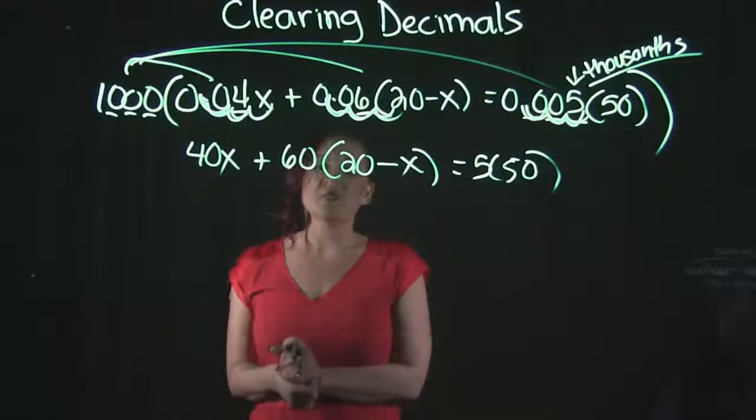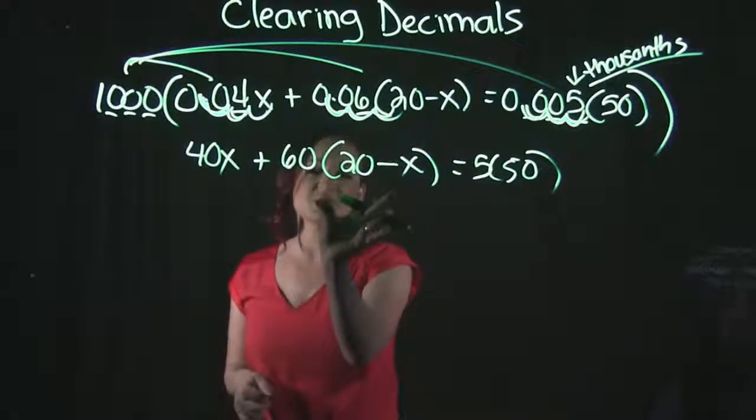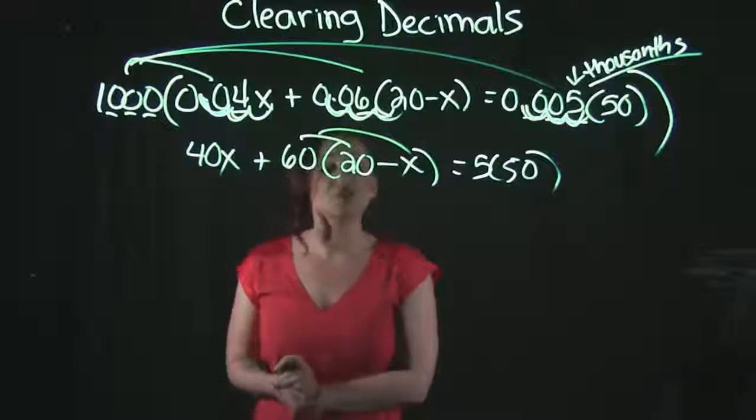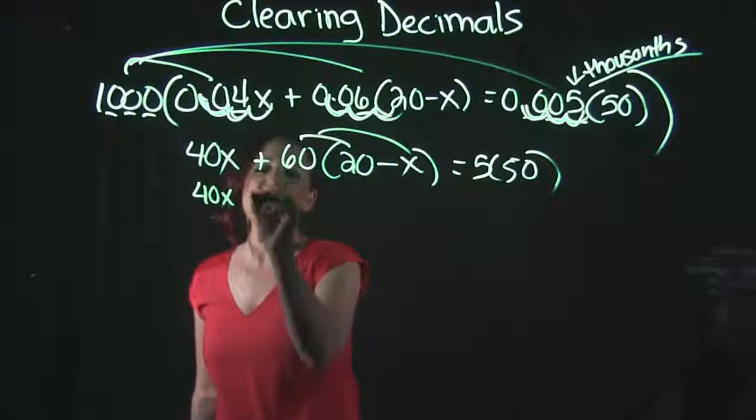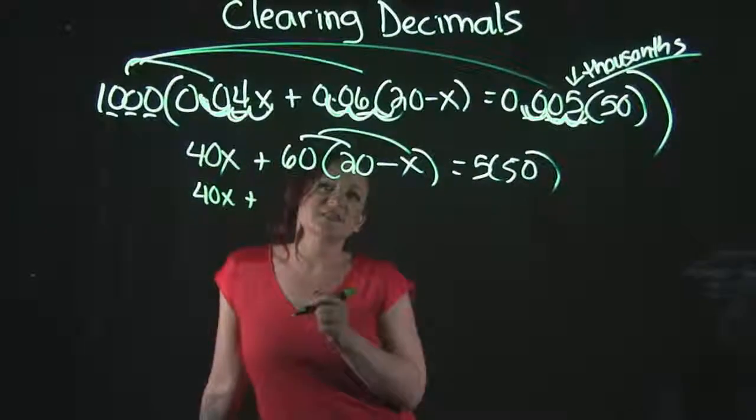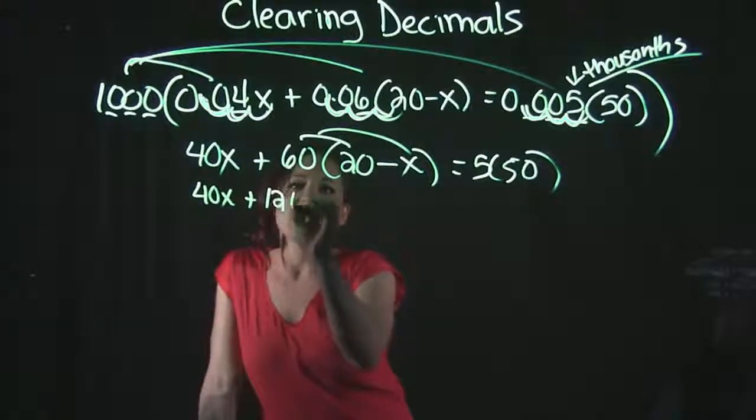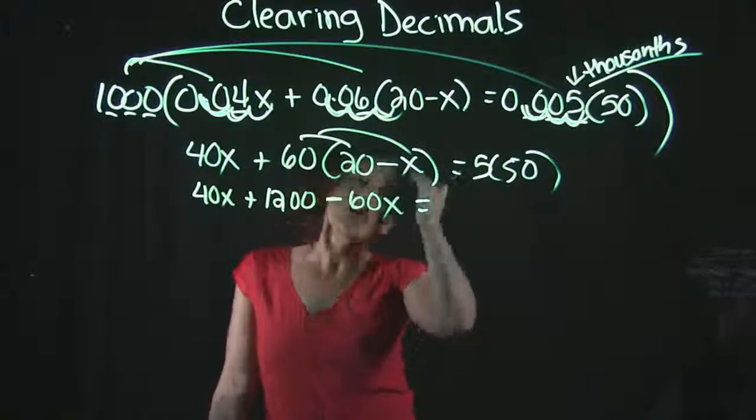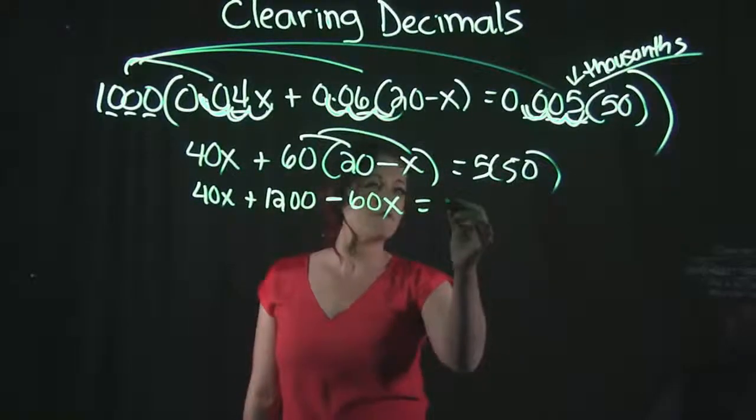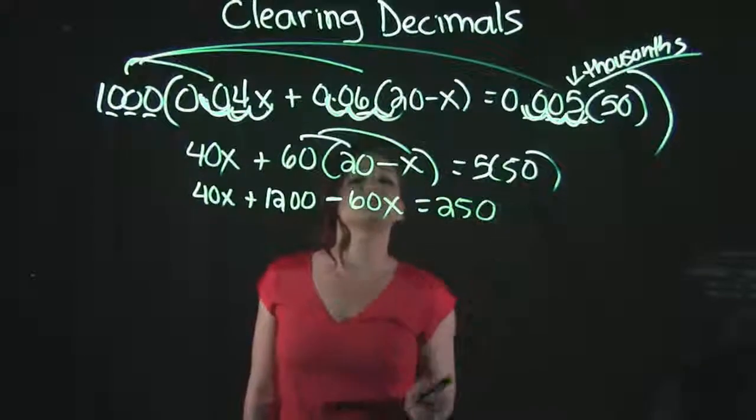Otherwise, we would continue with solving this equation. I still see I have a set of parentheses here in the middle of the equation, so I want to go ahead and get rid of those. So I'm going to drop down the 40x. Distributing that 60, 60 times 20 is 1,200 minus the 60 times the x. And over here on the right-hand side, 5 times 50 gives me 250.